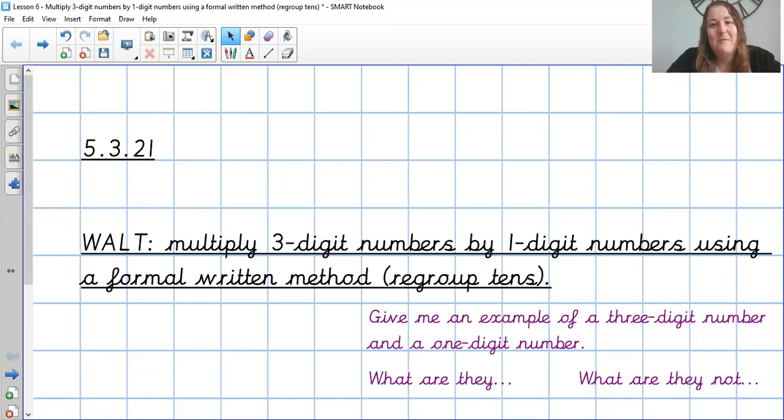But for your final maths today we're looking at lesson 6 which is multiplying three digit numbers by one digit numbers again. So the same as yesterday, still using that formal written method, but today we're going to be regrouping in the tens. Okay let's get started then.